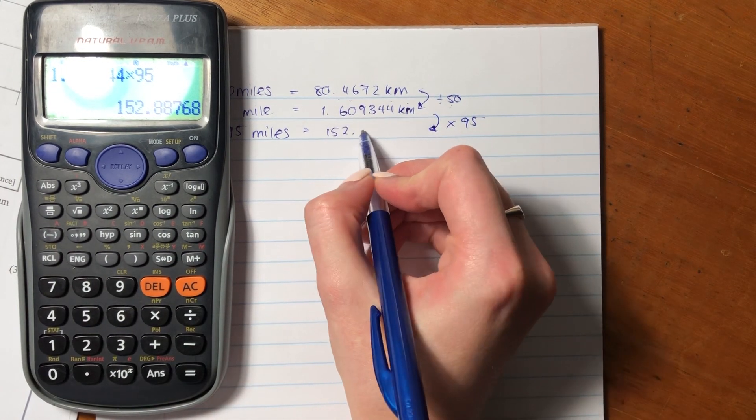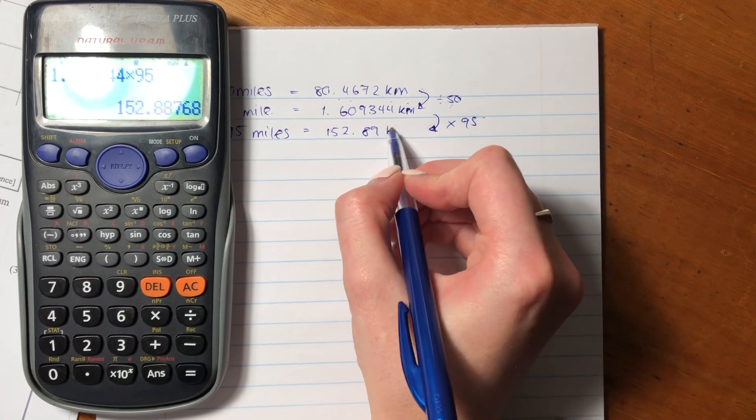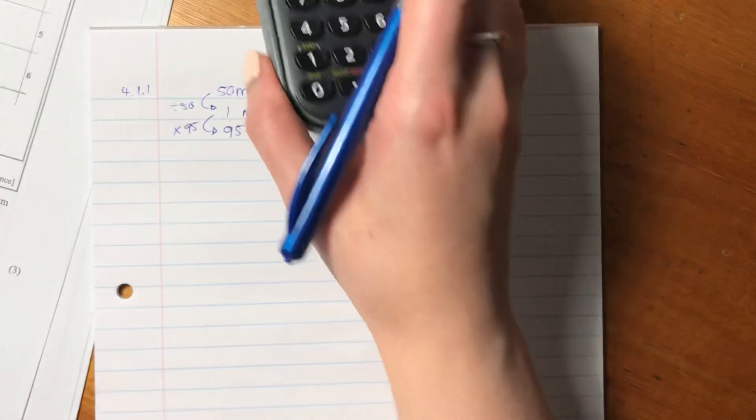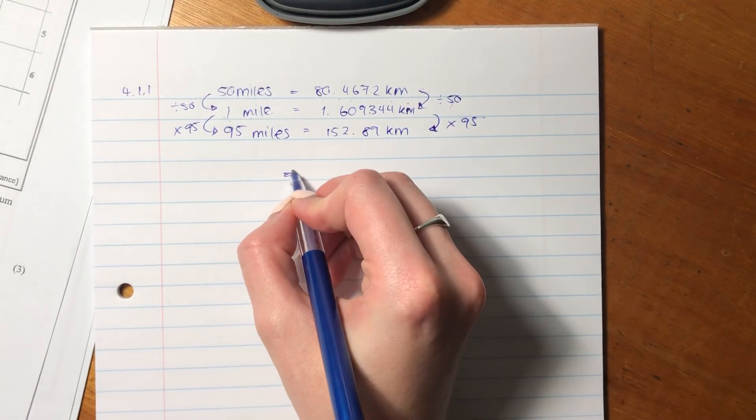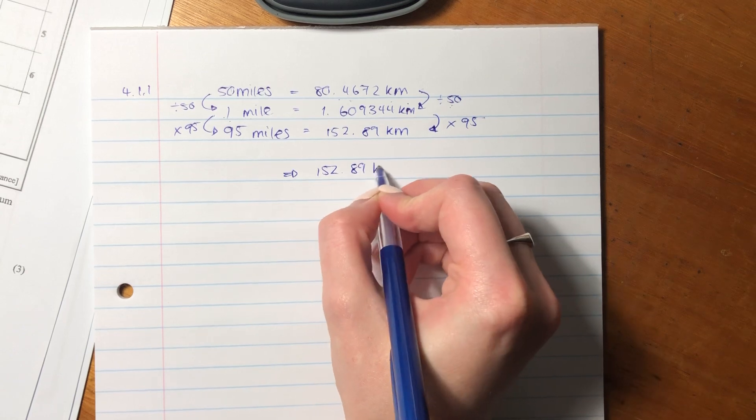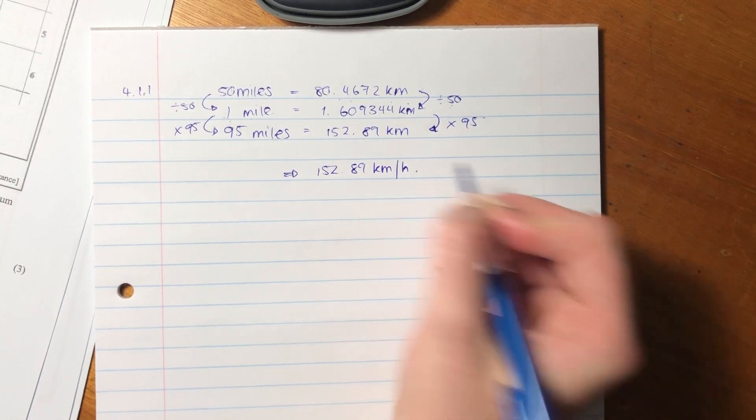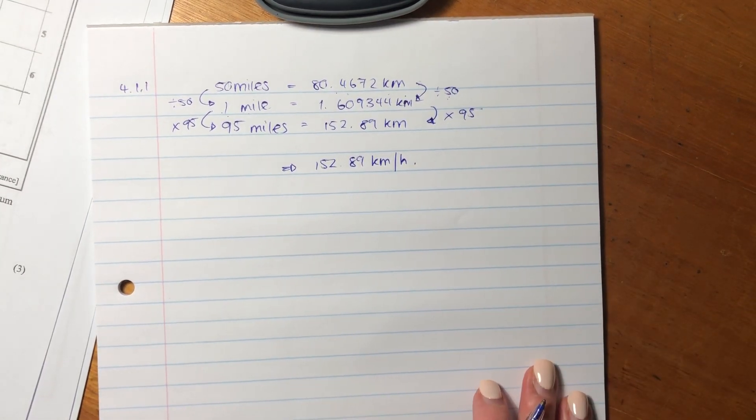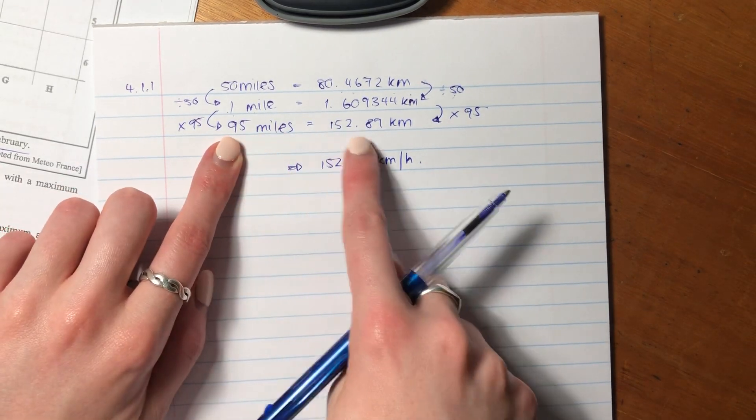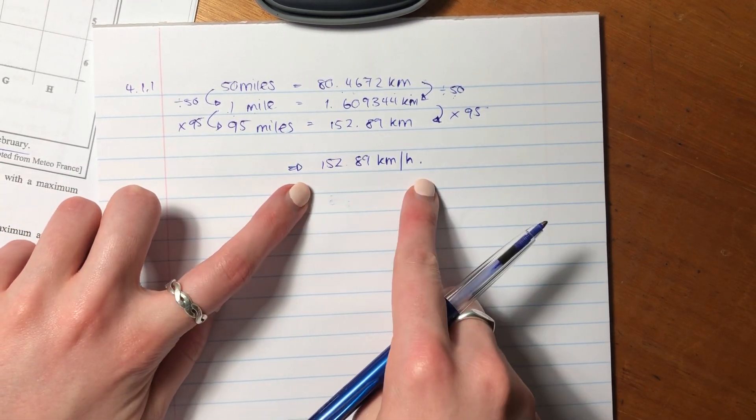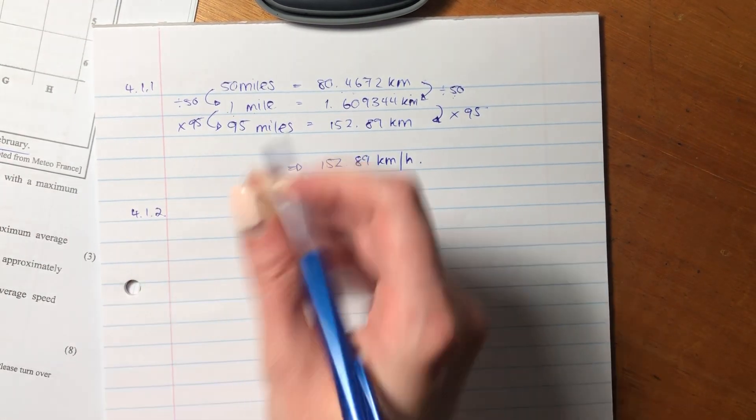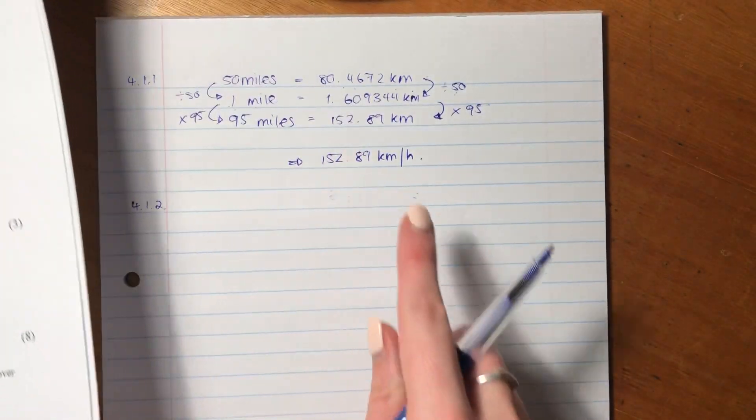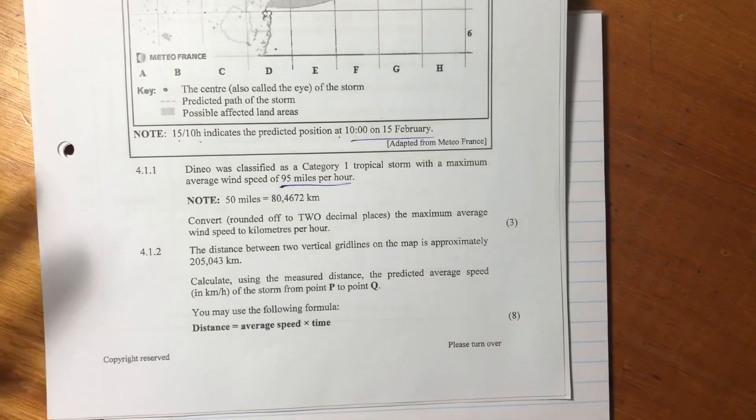So we get 152.89 kilometers. But remember that it wanted it as kilometers per hour. So our answer is then 152.89 kilometers per hour, because we know that it said 95 miles per hour. So it's that many kilometers per hour, and that's our final answer. We did it to two decimal places, which it asked us to do. That's important. Always write it in the form that they ask.